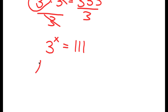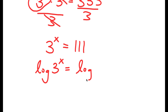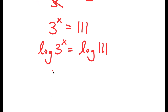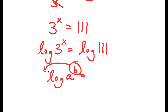Now if I take the log on both sides, I get log 3 to the power of x is equal to log 111. If I have something in the form log a to the power of b, I can move b to the front, so this equals b times log a.